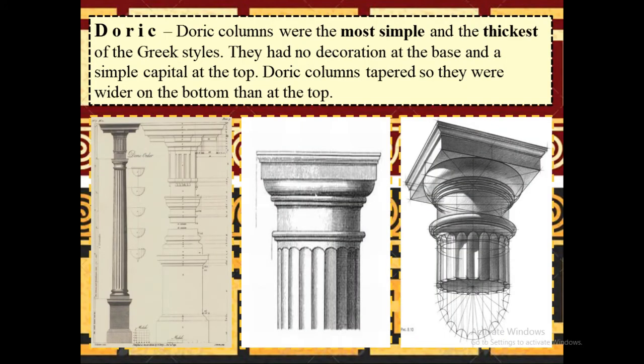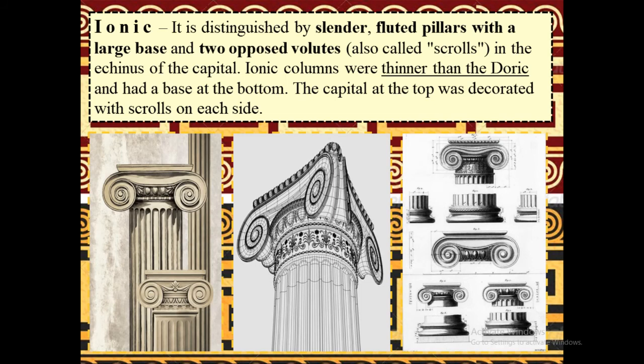Doric columns were the most simple and thickest of the Greek styles. They had no decoration at the base and a simple capital at the top. Doric columns tapered so they were wider on the bottom than at the top. Ionic columns are distinguished by slender, fluted pillars with a large base and two opposed volutes, also called scrolls, in the echinus of the capital. Ionic columns were thinner than the Doric and had a base at the bottom, with the capital at the top decorated with scrolls on each side.